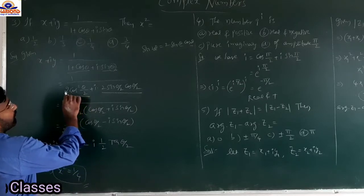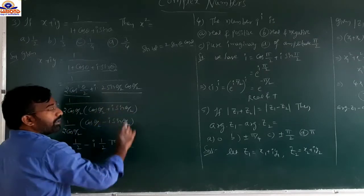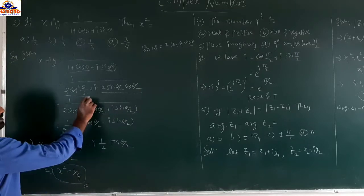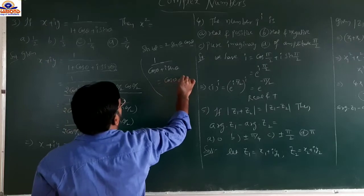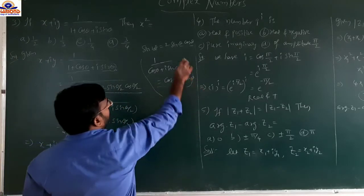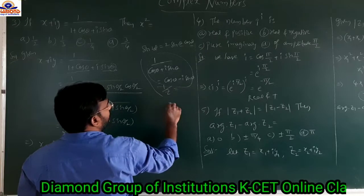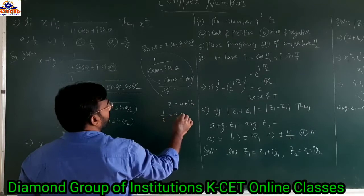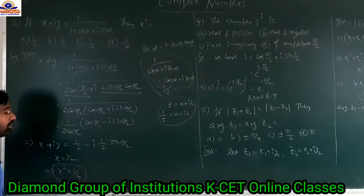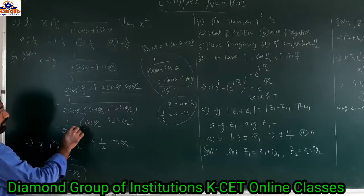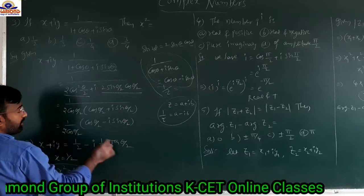Taking 2cos(θ/2) as a common factor in the denominator, the remaining is cos(θ/2) plus i·sin(θ/2). Now, 1/(cos θ plus i·sin θ) equals cos θ minus i·sin θ. Applying this, we get 1/[2cos(θ/2)] times (cos(θ/2) minus i·sin(θ/2)). The cos(θ/2) terms cancel, leaving 1/2 minus i·(sin(θ/2)/cos(θ/2)), which is 1/2 minus i·tan(θ/2).